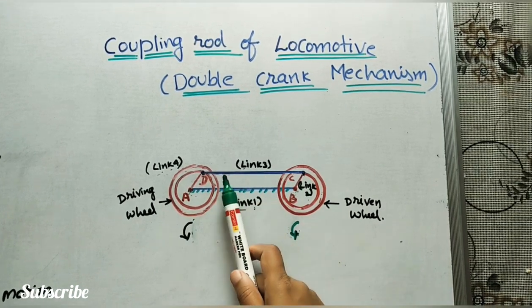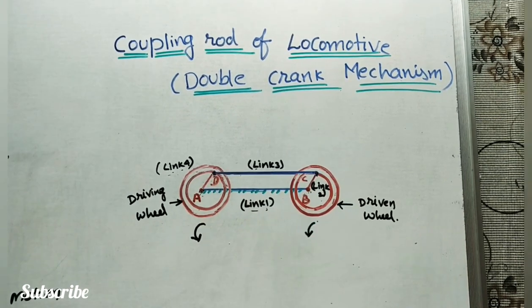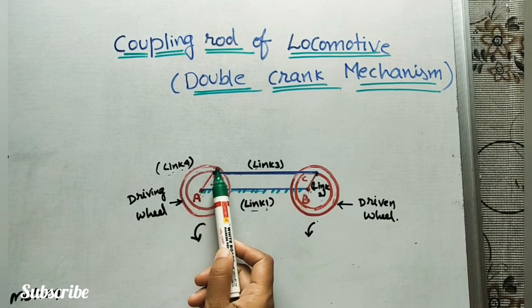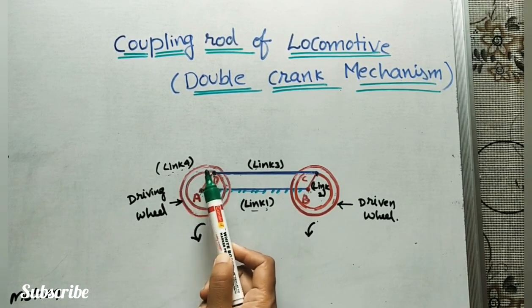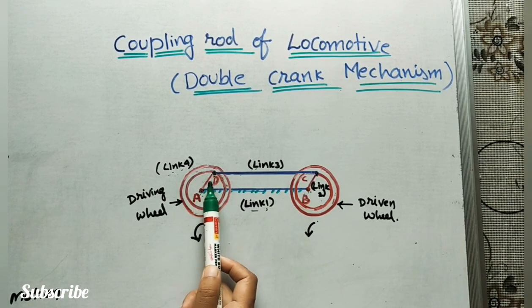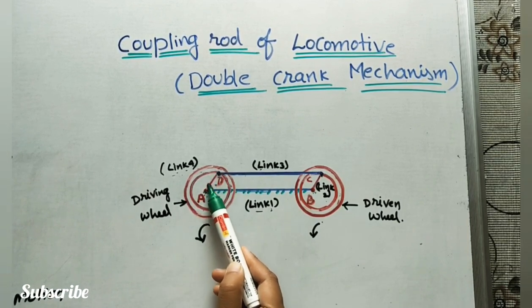This coupling rod transmits motion from this wheel to this wheel. If we are giving power to this crank AD, as you know cranks make complete rotation, this will rotate. We can call it as driving crank or driving wheel because of the rotation of this crank AD.